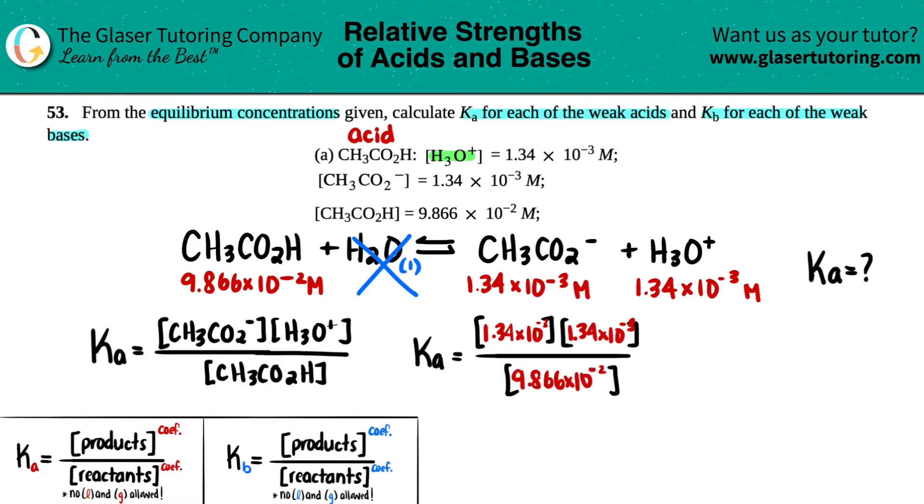Okay, and then I'm just going to calculate. So Ka equals, I could do this all in one shot, 1.34 times 10 to the negative 3 times 1.34 times 10 to the negative 3. So that's squared, divided by 9.866 times 10 to the negative 2nd.